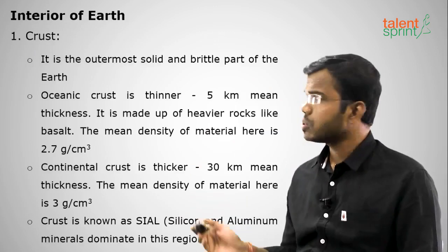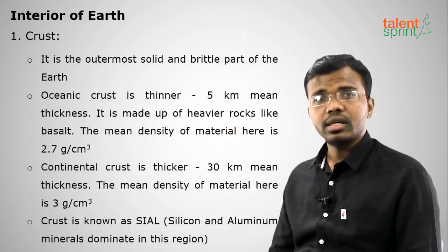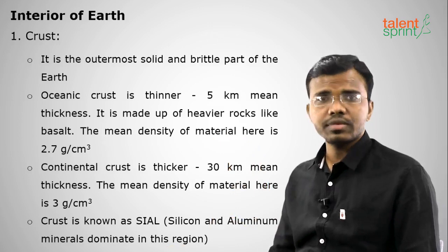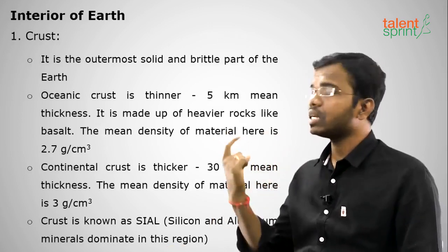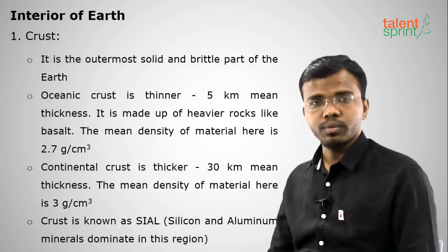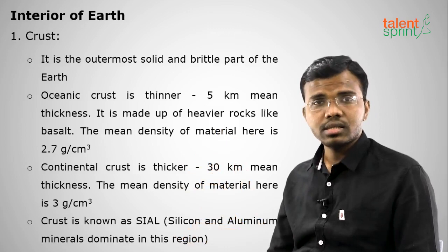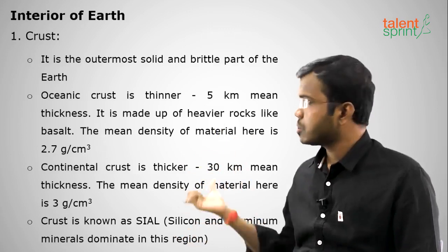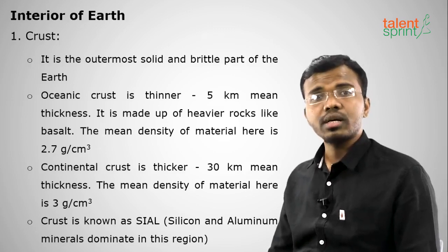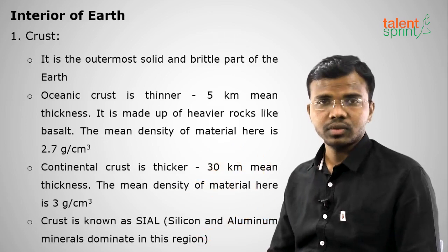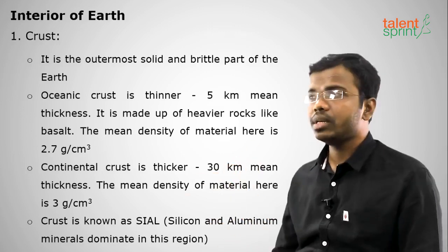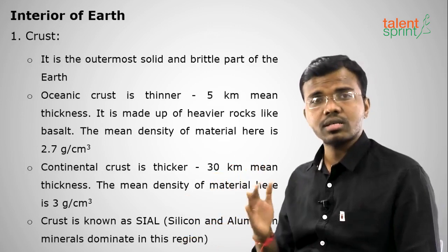The first layer we touch is the crust — it is the outermost part of the Earth and is solid in nature. We have oceanic crust and continental crust. Oceanic crust is around 5 kilometers thick with a density of 3 g/cm³, while continental crust is around 30 kilometers thick with a density of 2.7 g/cm³. The crust is also known as SIAL, dominated by two minerals: silicon and aluminum.